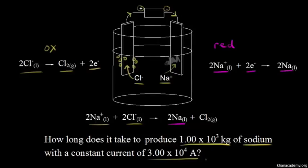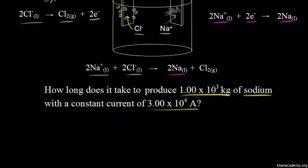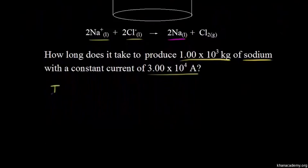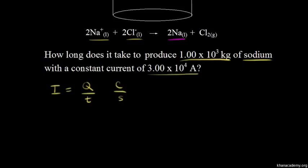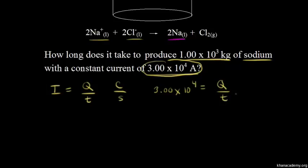So we have another quantitative electrolysis problem — a little harder than the one we did before. We're going to start the same way, with the definition of current: current is equal to charge over time, Q over T, where charge is in coulombs and time is in seconds. We know the current is 3.00×10⁴ amps, so 3.00×10⁴ = Q/T. We want to find the time, and if we can find the charge, we can find the time using this equation.